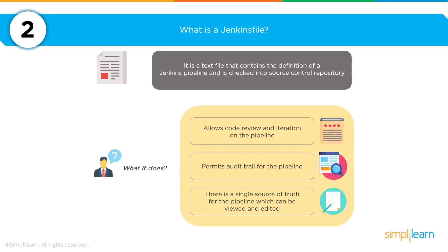The next question is: what is a Jenkins file? A Jenkins file is a text file that has a definition of the Jenkins pipeline and is checked into a source code repository. This allows for three distinct things: one, it allows for a code review and iteration of the pipeline; two, it permits an audit trail for that pipeline; and three, it provides a single source of truth for the pipeline which can be viewed and edited.